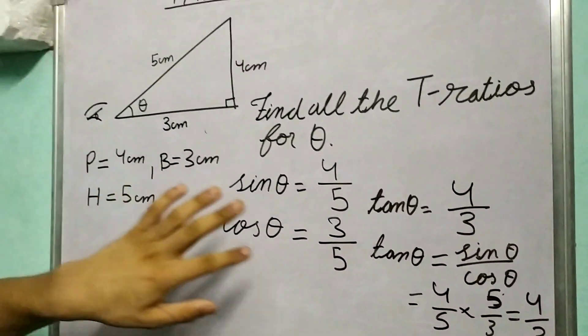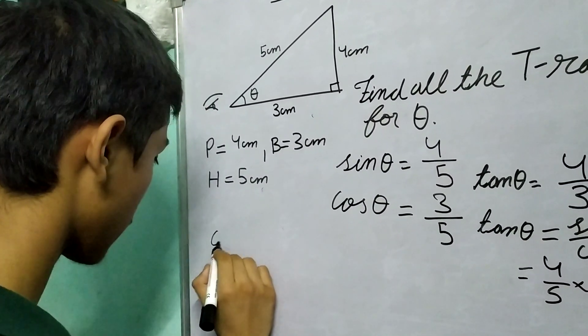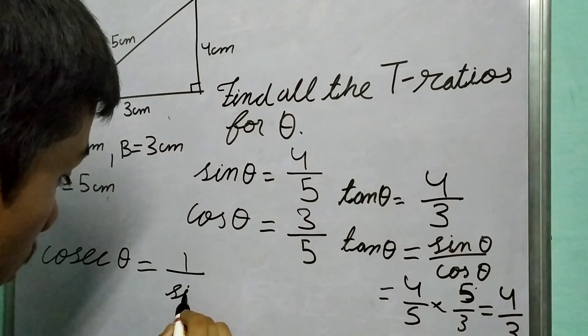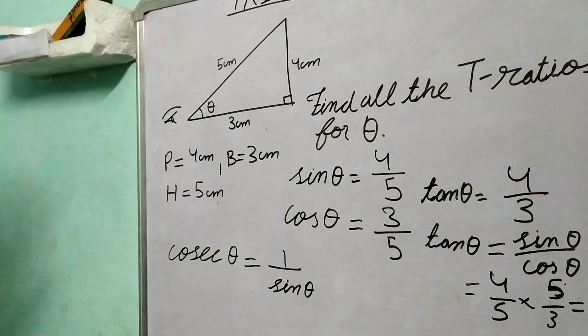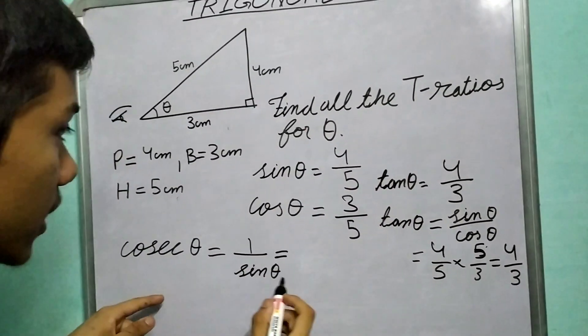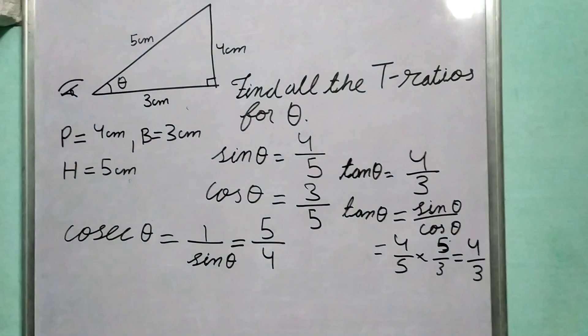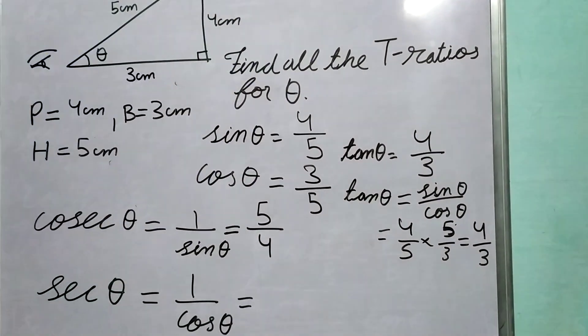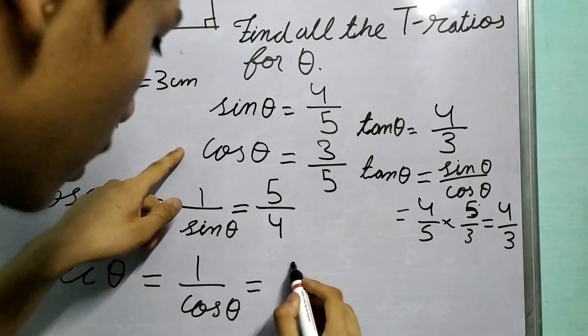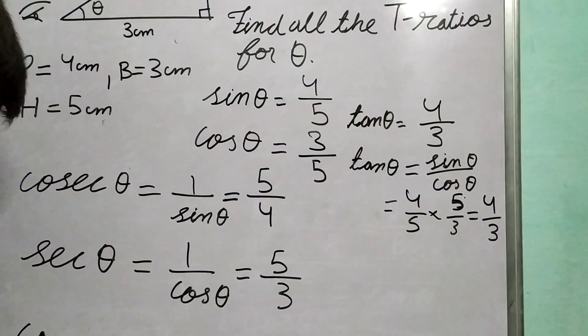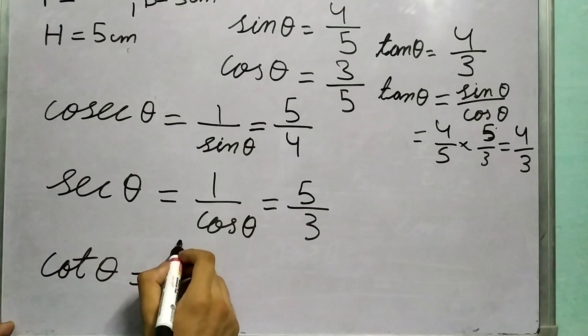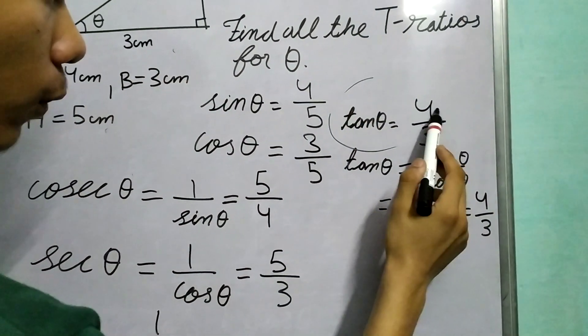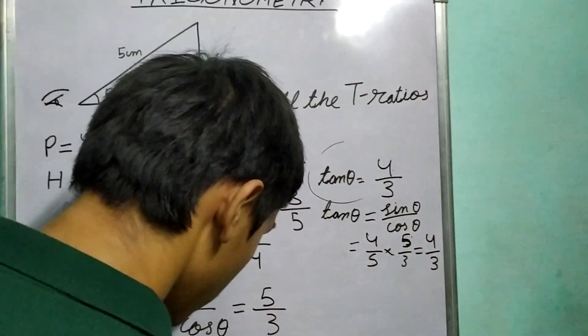Now we need to solve for the other three; they are reciprocals. So cosec theta is 1 upon sin theta. We have just derived it. What is sin theta? Sin theta is 4 by 5, therefore cosec theta will be 5 upon 4. Similarly, sec theta is 1 upon cos theta, and cos theta is 3 by 5, so 1 upon cos theta will be 5 upon 3. Now we are left with cot theta, and cot theta is 1 upon tan theta. Tan theta is 4 by 3, so cot theta will be 1 upon 4 upon 3, or 3 upon 4.